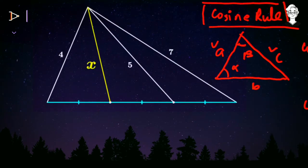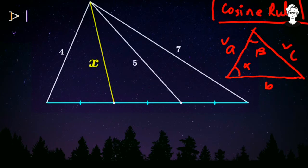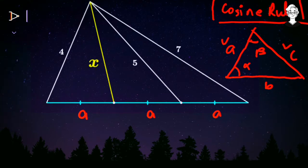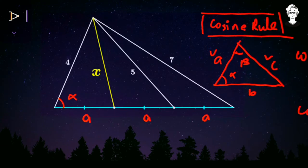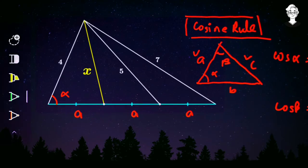First, let us assign some variables. The sides are already named except for the base. Let us name the base as 'a', and again 'a', and again 'a' — because they are equal. The tick marks on the diagram indicate that all those line segments have equal length. This angle I will call alpha. Now all sides have been named and one angle has been defined. Let us apply the cosine rule.